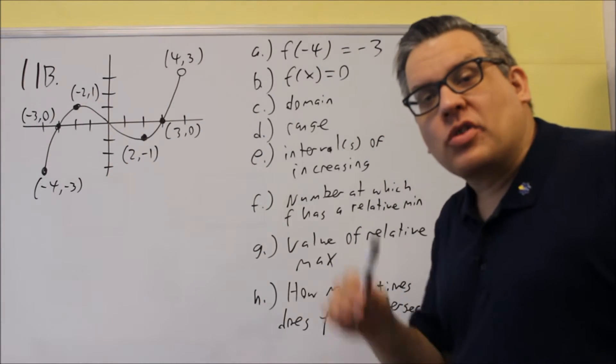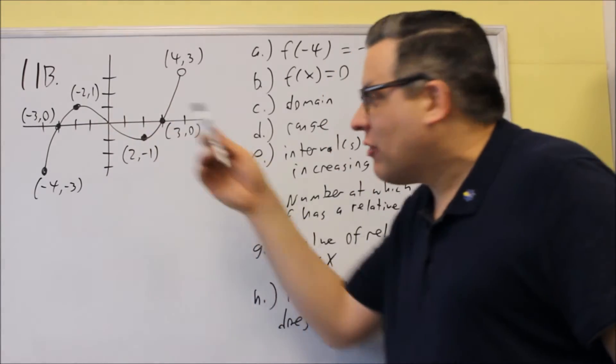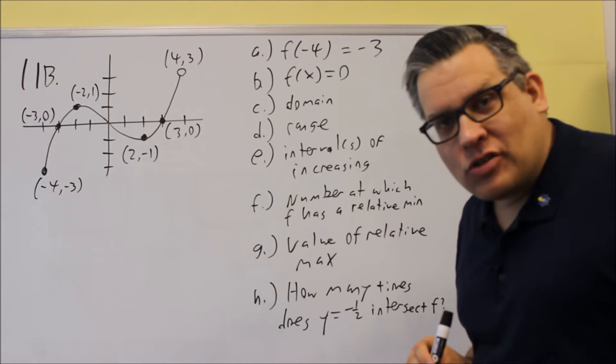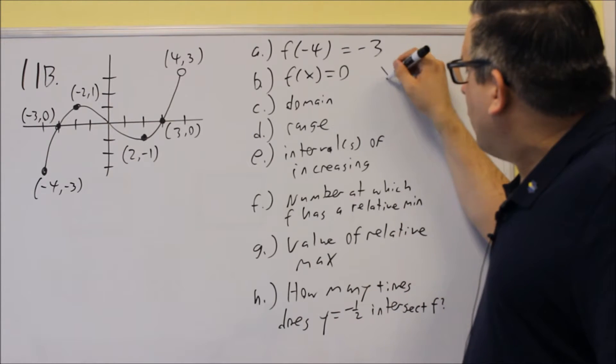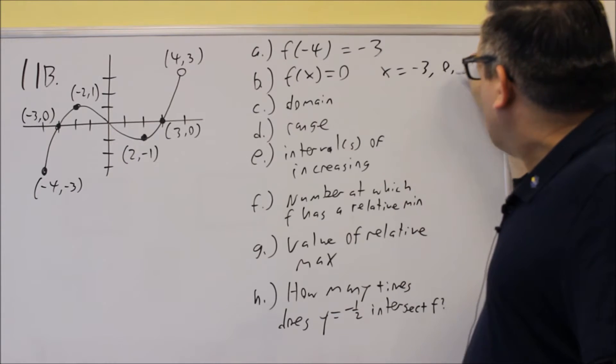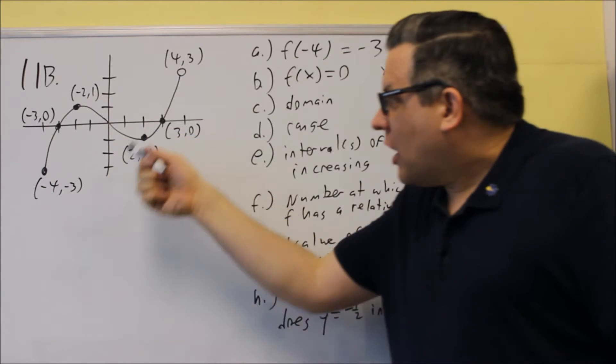However, we still need to include that in our answer. So even though it doesn't have a dot there, that still is a place where the y value is equal to 0. So my answers for this, I would have x is equal to -3, 0, and 3. I got all three of those in the answer.